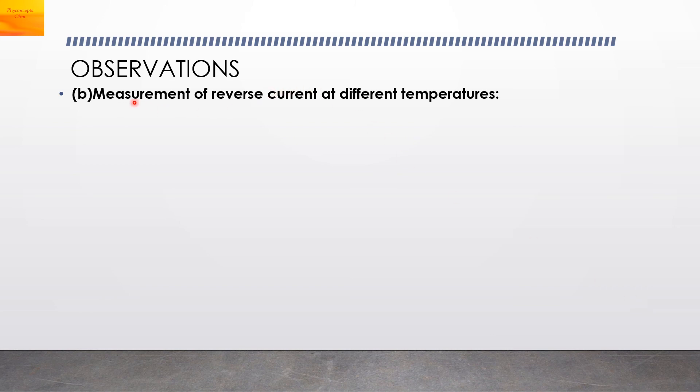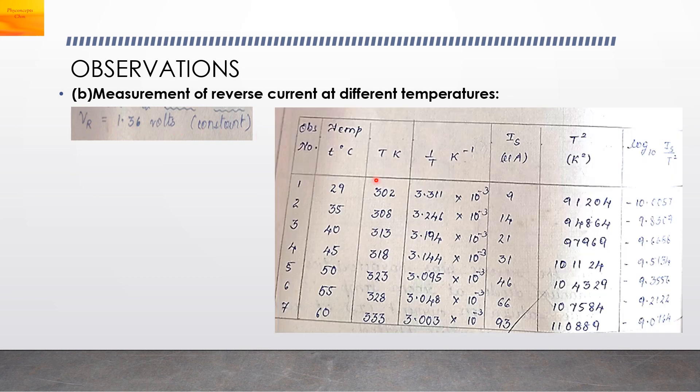Second part: we will measure the reverse saturation current at different temperatures. We will keep the voltage constant at 1.36 volts and change the temperature: 29, 35, 40, 45 degrees, taking till 60 degrees and note down the current. It is increasing. This temperature is in degree Celsius converted into Kelvin. Find out 1 by T, calculate T square, and then you can find the log to the base 10 of IS upon T square, which is negative.